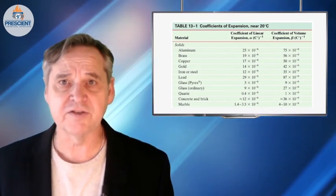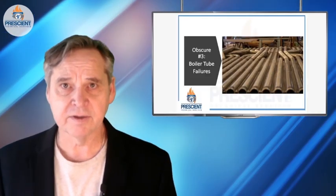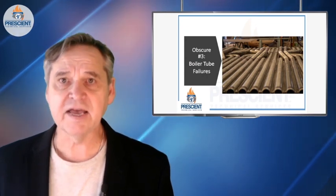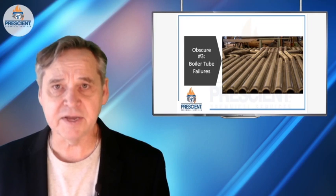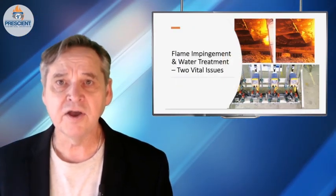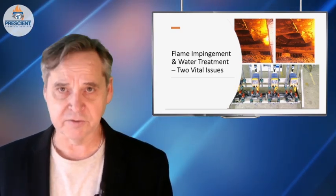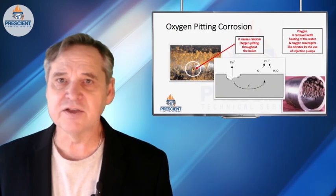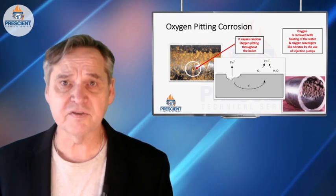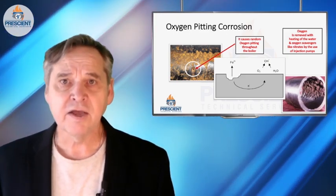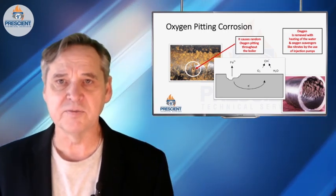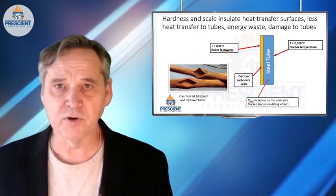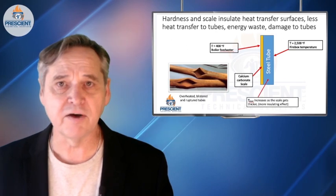Obscure issue number three is boiler or furnace tube and mechanical integrity issues — and I'll focus on the case of boilers, though it's the same issue for a refinery heater, for example. The issue is that if your water treatment is not correct, or you've got flame impingement on tubes, you dramatically reduce the useful life of this equipment and it sneaks up on you. You can't readily observe the internal condition of tubes. There are some failure mechanisms, especially in the water treatment world, which are catastrophic. If you start to have oxygen pitting, it can happen randomly throughout a number of different tubes. If you bleed through hardness and start depositing calcium and magnesium within boiler system tubes, you'll start to overheat them, blister them, and they'll fail.